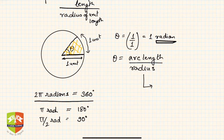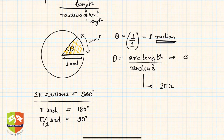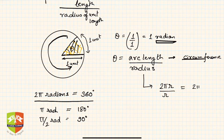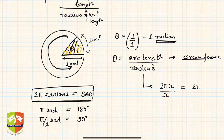One more interesting thing: if the arc length becomes the full circumference — that is, 2πr — and you divide by the radius r, the angle you get is 2π radians. This matches the fact that the angle at the center of a full circle is 360 degrees. So taking the full circumference gives 2π radians at the center, which is equivalent to 360 degrees.